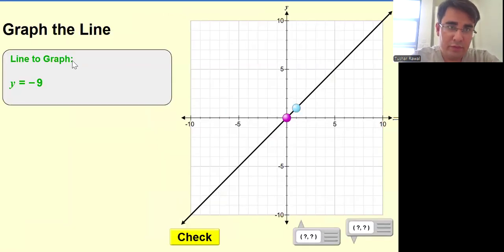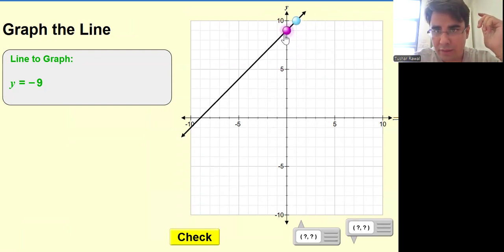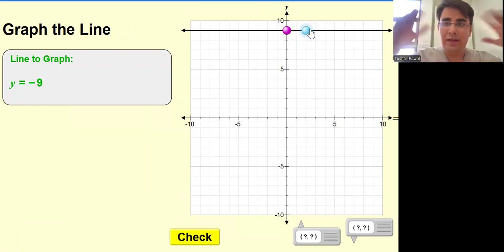Welcome to level five. In level five, y equals minus nine. Try to understand, there is no x, so just go to minus nine on y. Minus nine is over here, and since there is no x, there won't be any inclination. Are you getting my point? So it is a flat line which is parallel to the x-axis, passing through minus nine on y.